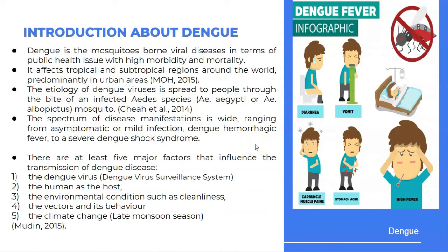There are at least five major factors that influence the transmission of dengue disease. The dengue virus consists of four different types: Dengue virus 1, Dengue virus 2, Dengue virus 3, and Dengue virus 4, and can be monitored by a dengue virus surveillance system. The next factors are the human, environmental conditions such as cleanliness, the vector and its behaviour, and climate change.